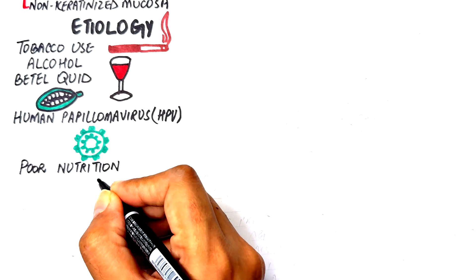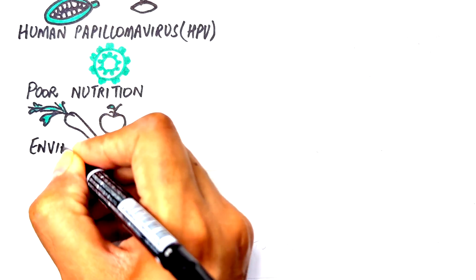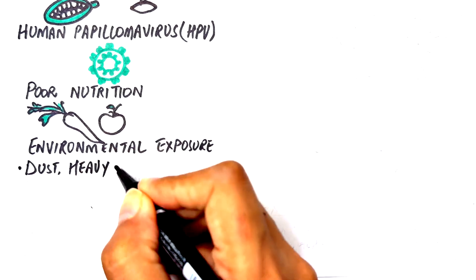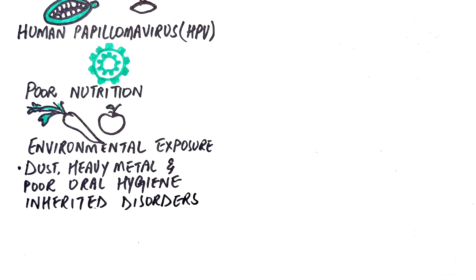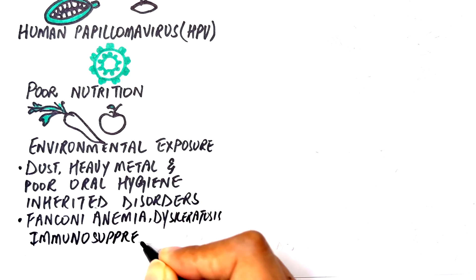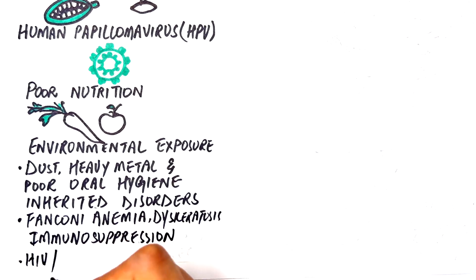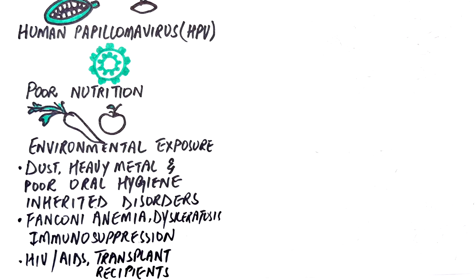Poor nutrition — such as low intake of fruits, vegetables, and vitamin D — and environmental exposures like dust, heavy metals, and poor oral hygiene are also contributing factors. Inherited conditions like Fanconi anemia and dyskeratosis congenita impair DNA repair mechanisms. Finally, immunosuppression seen in HIV/AIDS patients and transplant recipients reduces tumor surveillance.